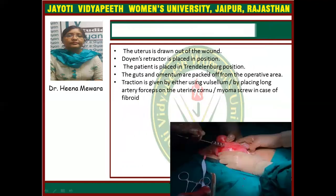The uterus is drawn out of the wound. Doyen's retractor is placed in position. The patient is placed in Trendelenburg position. Gut and abdomen are packed off from the operative area. Traction is given either by using vulsellum or placing long artery forceps on the uterine cornua, or a myoma screw in case of fibroid. This picture shows how to give traction in the case of fibroid.